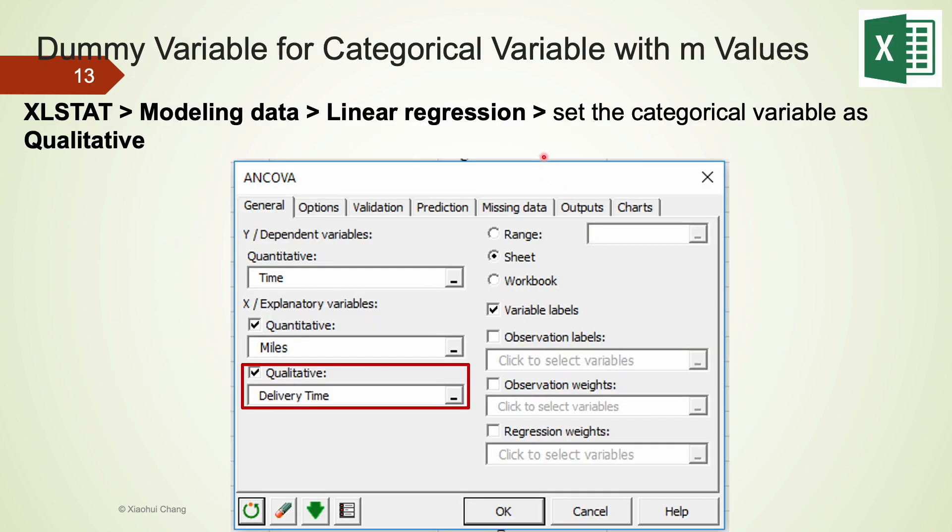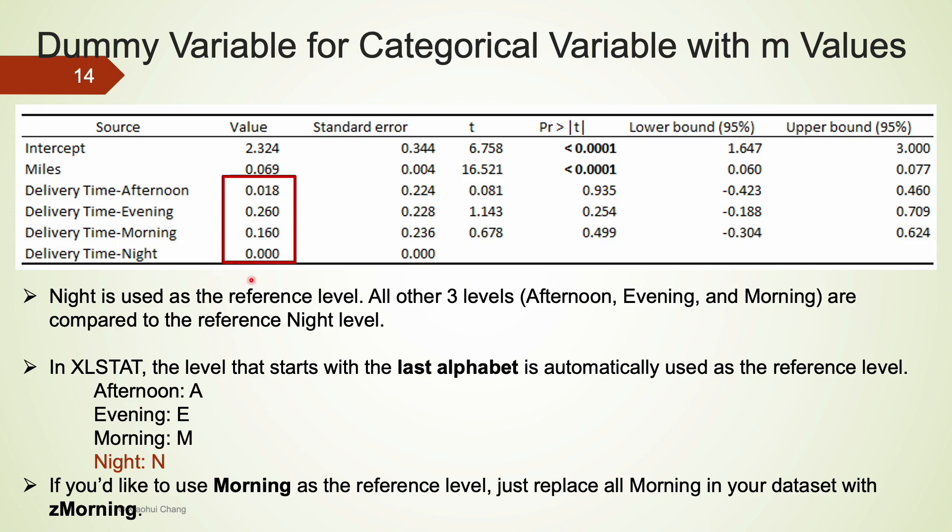For linear regression in xlstat, this time, we have to input delivery time as a qualitative or categorical variable here. This is the coefficient table obtained from xlstat. Night is used as the reference level. So you can see the slope coefficient for night is actually 0. All other three levels, afternoon, evening, and morning, they are all compared to the reference night level. In xlstat, the level that starts with the last alphabet is automatically used as the reference level. Because night begins with the letter N, while other levels start with A, E, and M. So night is used as a reference for our dataset. If you like to use morning as your reference level, all you need to do is replace all morning in your excel dataset with a small letter z morning. And this will be used as the reference level automatically.